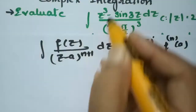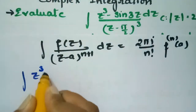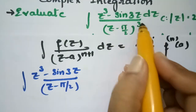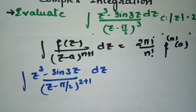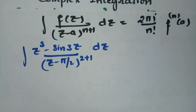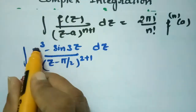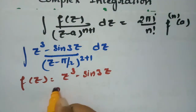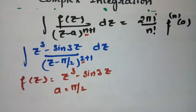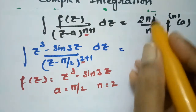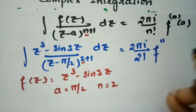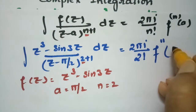We need to evaluate ∫ (z³ − sin3z)/(z − π/2)³ dz. Writing the denominator as (z − π/2)^(2+1), we compare with the formula. So f(z) = z³ − sin3z, a = π/2, and n = 2. Substituting into the formula gives (2πi/2!) · f''(π/2).